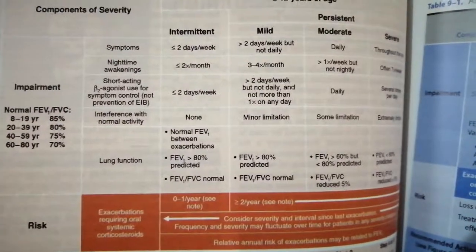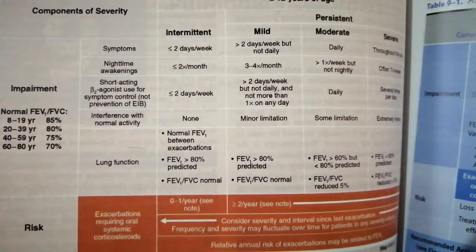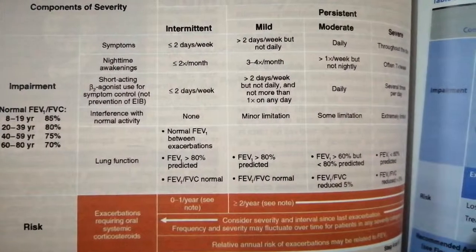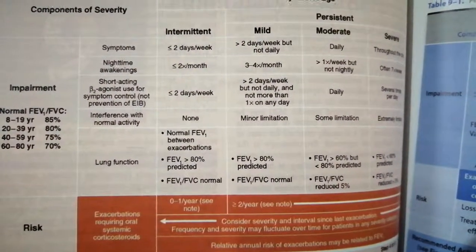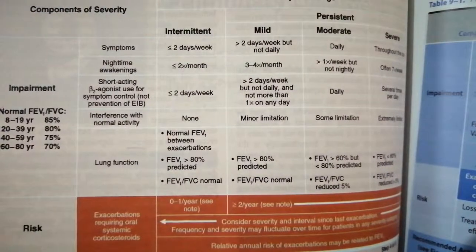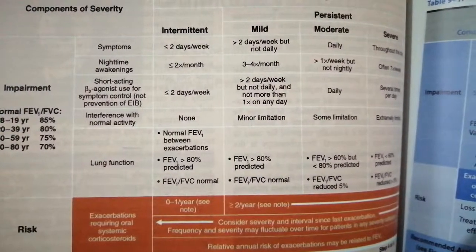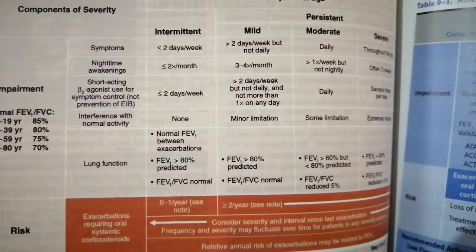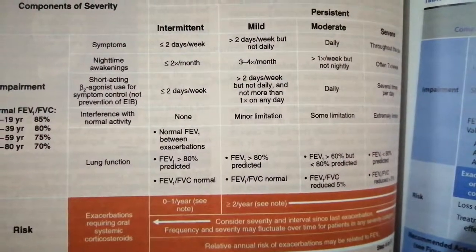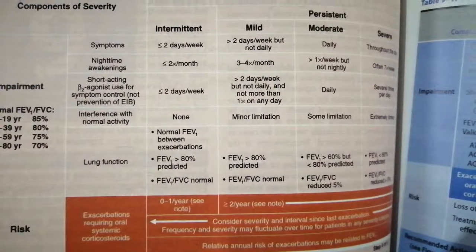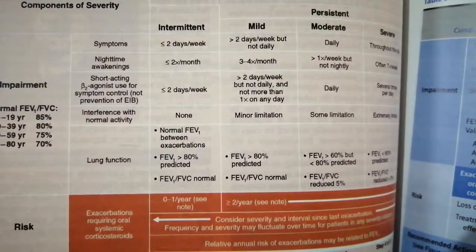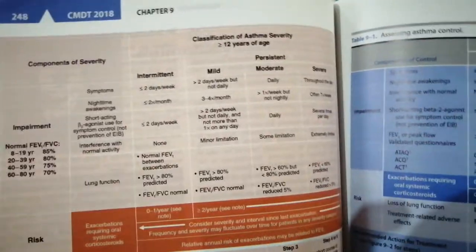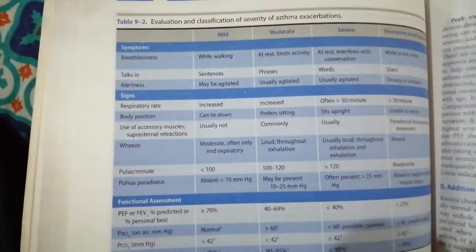In mild asthma, symptoms increase to more than two days per week, nighttime awakening occurs three to four times per month, and short-acting beta-agonist use increases to more than two days per week. There is minor limitation of activity, and FEV1 and the FEV1/FVC ratio remain normal.